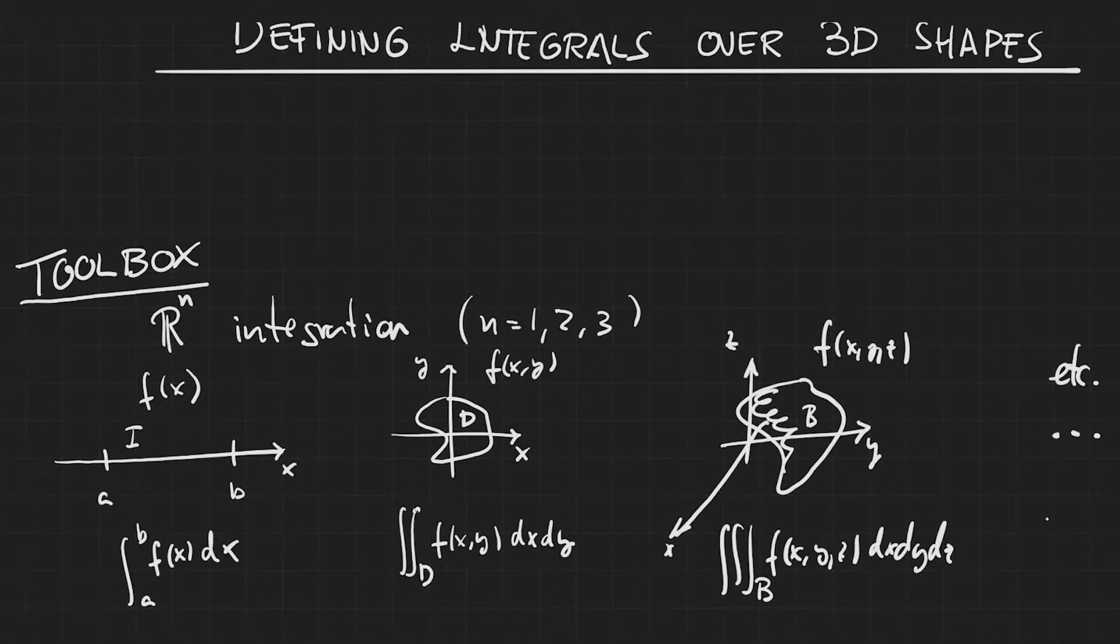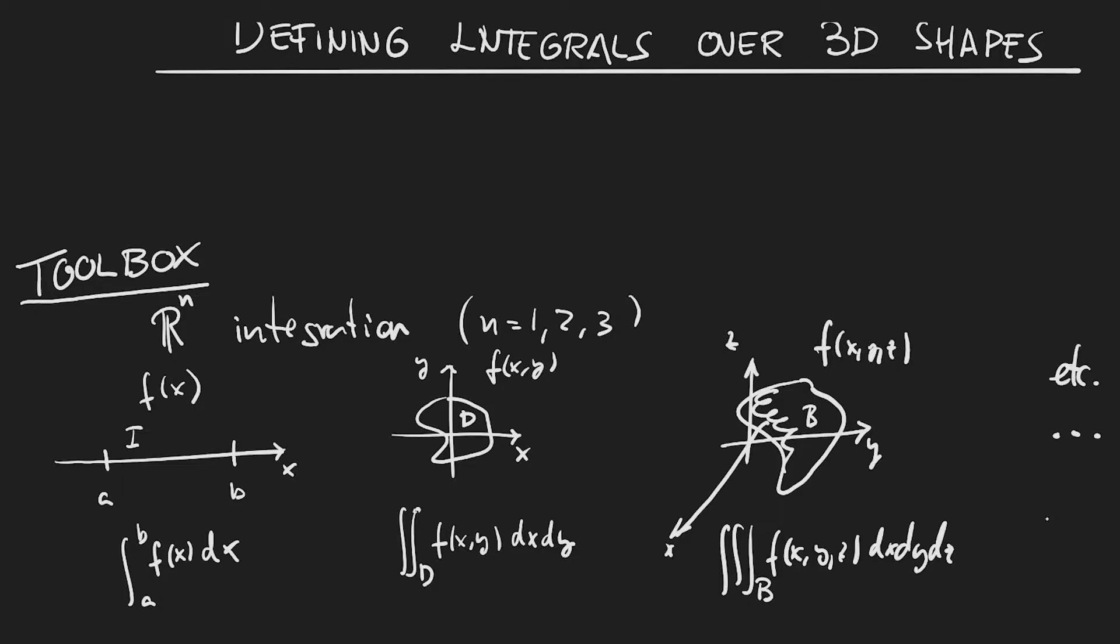Our toolbox consists essentially of R^n integration, so this is conventional integration from single variable calculus, as you can see over R in an interval a, b, as well as multiple integration that we've defined over R², R³, and in fact it's easy to see that we could go on and define integration in R^n in general.